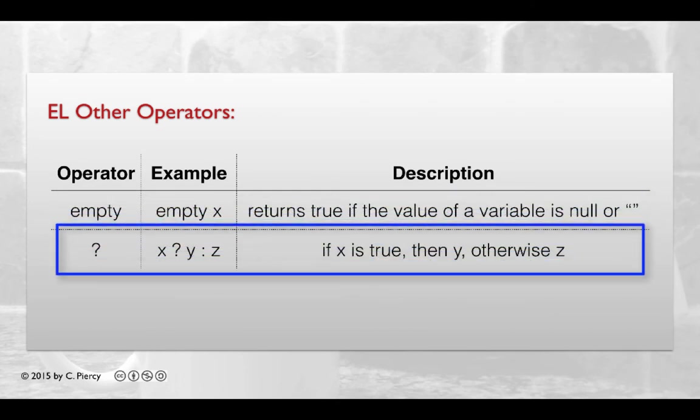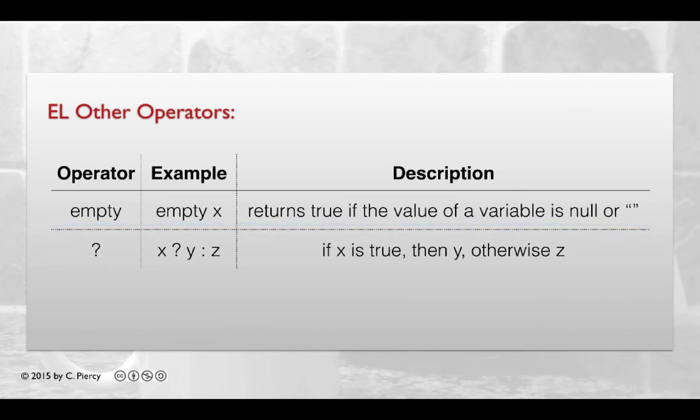The question mark operator allows us to use an if-then type of construction to return a value to our view. For example, we might have the expression x, question mark, then a value, y, and another value, z. This would mean check out x. If it's true, then let's return the value of y. Otherwise, return the value of z.